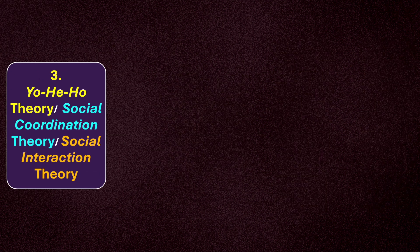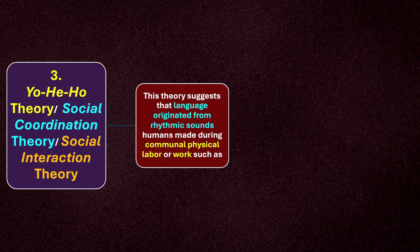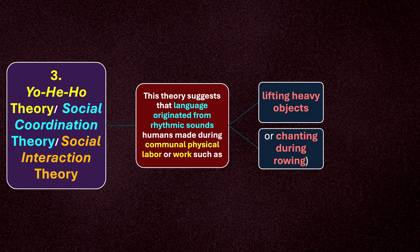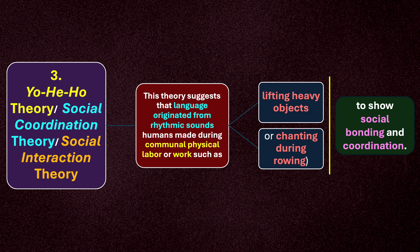Moving on to point number three: the yo-he-ho theory, also called social coordination theory or social interaction theory. This theory suggests that language originated from rhythmic sounds humans made during communal physical labor, such as lifting heavy objects or chanting during rowing, to show social bonding and coordination. When working together in a group, producing singing sounds or expressions to energize the group to complete work — that is the key idea here.